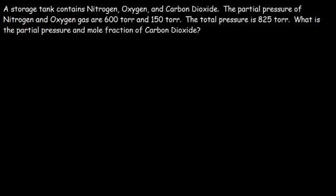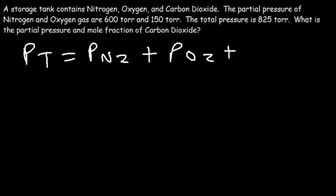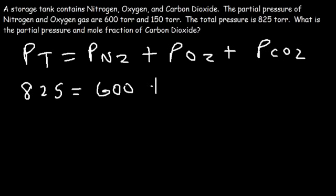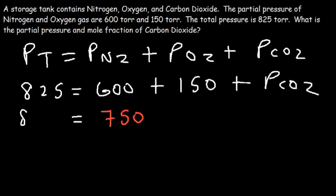Let's try one more problem. A storage tank contains nitrogen, oxygen, and carbon dioxide. The partial pressure of N2 is 600 torr, O2 is 150 torr, and the total pressure is 825 torr. We need to find the partial pressure of CO2. According to Dalton's law, total pressure equals the sum of all partial pressures. So: 825 equals 600 plus 150 plus the partial pressure of CO2. Since 600 plus 150 is 750, the partial pressure of CO2 is 825 minus 750, which is 75 torr.